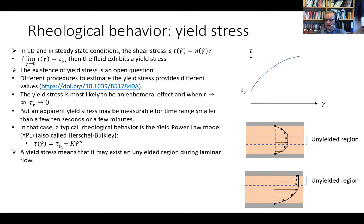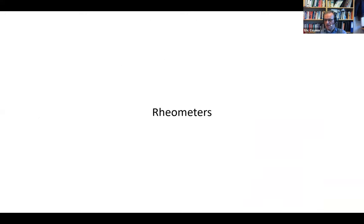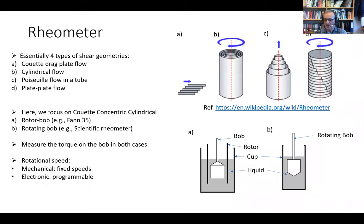The presence of yield stress means you may have a plug region in Poiseuille or Couette flow — an unyielded region. There are essentially four types of rheometers: direct plate (Couette flow principle), cylindrical flow with rotating cylinders, Poiseuille flow tube, and plate flow with a rotating plate. In this presentation, we only focus on the Couette concentric cylindrical rheometer, configuration B — cylindrical flow.